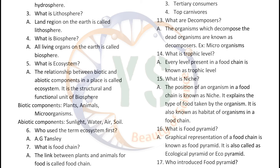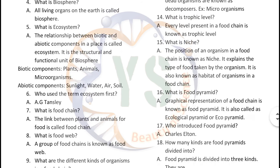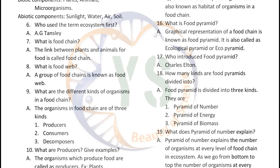What is food pyramid? Graphical representation of a food chain is known as food pyramid. It is also called ecological pyramid or eco-pyramid. Who introduced food pyramid? The scientist Charles Elton. How many kinds are food pyramids divided into? Food pyramid is divided into three kinds: pyramid of number, pyramid of energy, and pyramid of biomass.